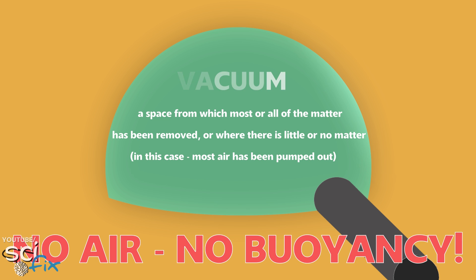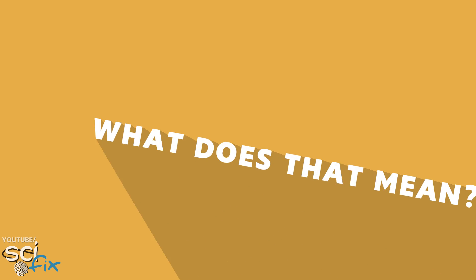Now add a glass dome and suck all the air from it. We have a space without any air, it's called a vacuum. That means the buoyancy force won't affect the feathers and the gold now. What does that mean?